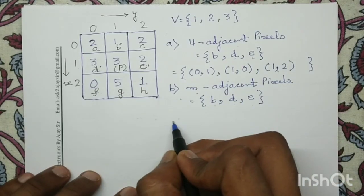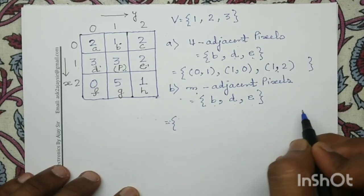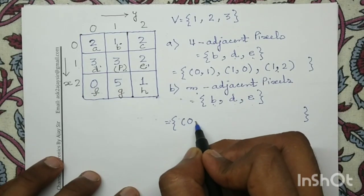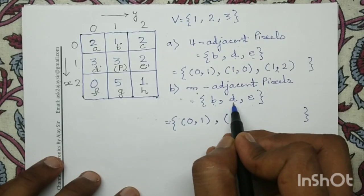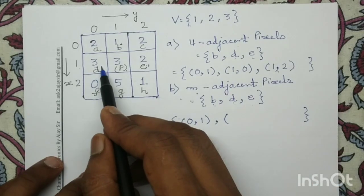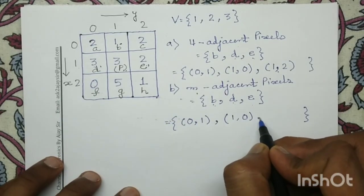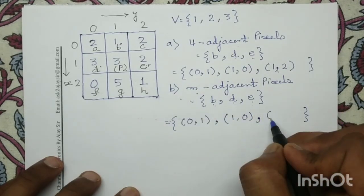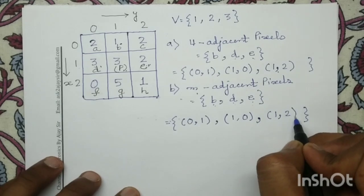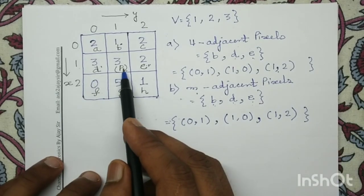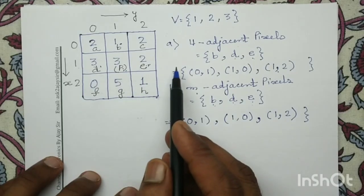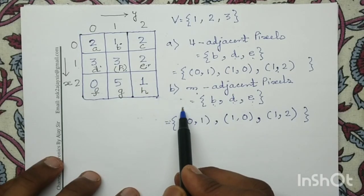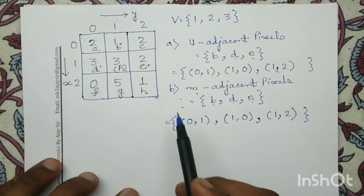The M-adjacent pixels in coordinate form are: pixel B at (0,1), pixel D at (1,0), and pixel E at (1,2). For the given pixel P at coordinate (1,1), we have determined its four-adjacent pixels and M-adjacent pixels, and both sets are B, D, and E. This completes the question. Thank you.